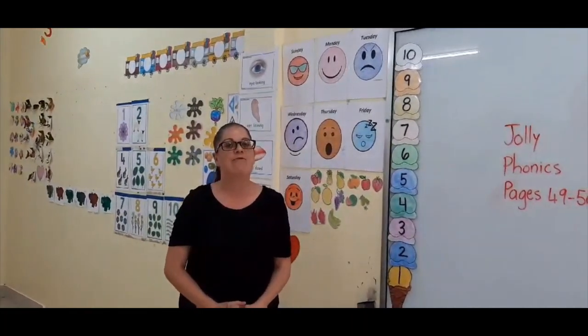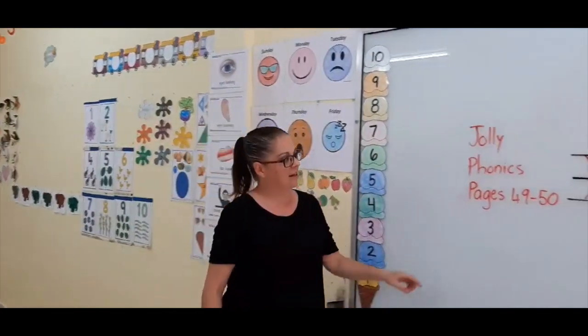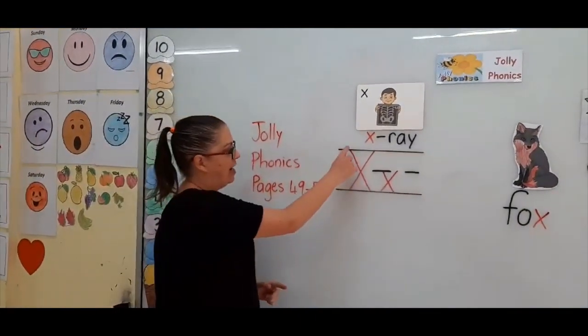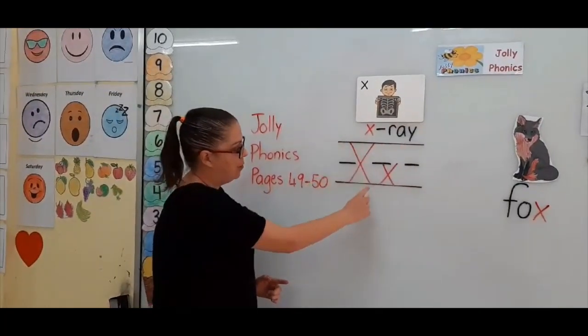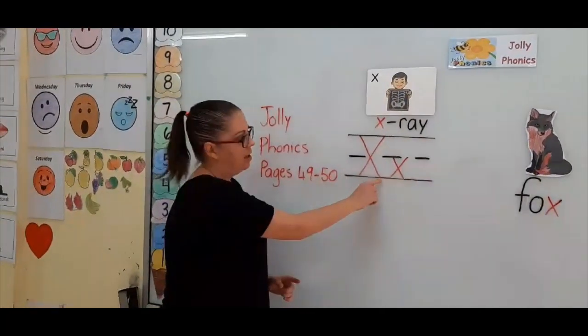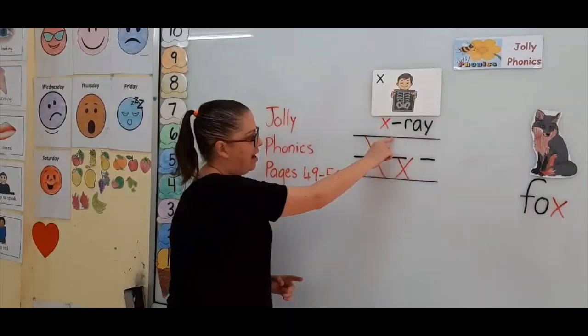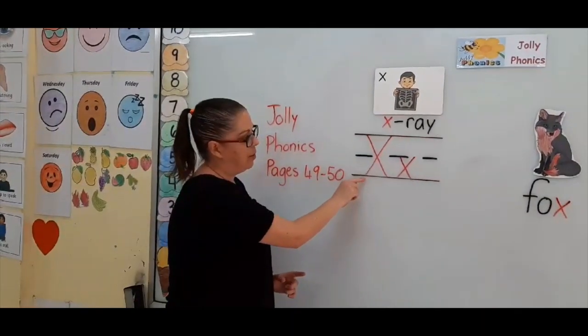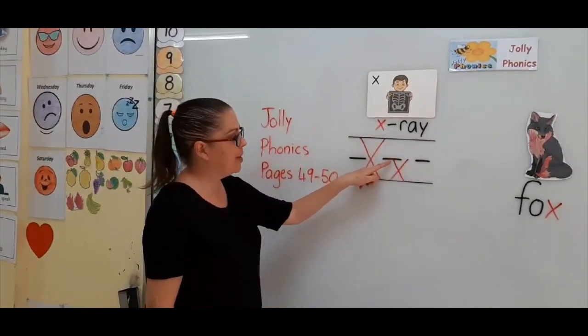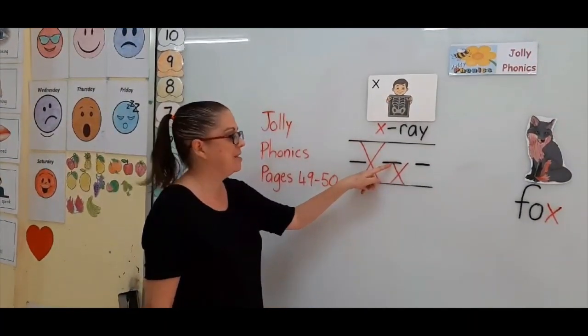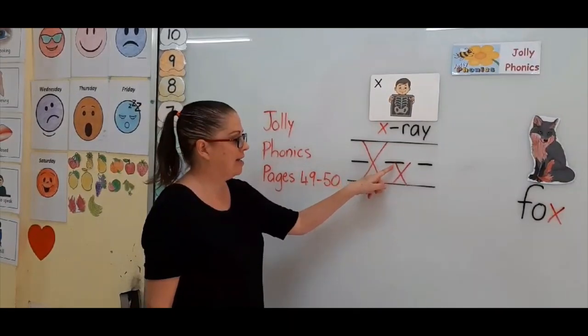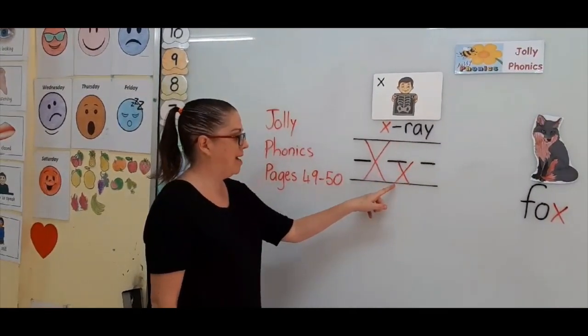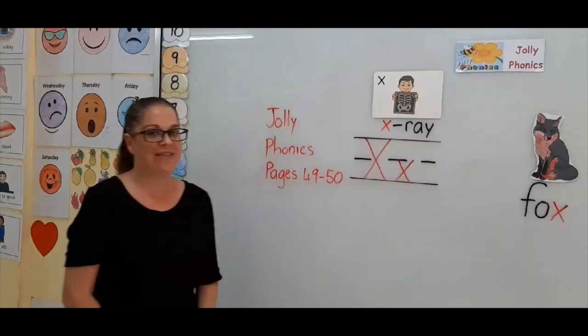Now let's see how we write the letter X. With the capital X we start at the top and we do a line down all the way to the bottom. Then we come over here and we do a line across it all the way to the bottom. For the small X you do exactly the same except you start in the middle. So line down to the bottom and then back to the top and all the way down. That is how you write the letter X.